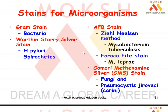Helicobacter pylori can also be detected with silver stains for spirochetes. Spirochetes are another group of microorganisms — famous examples include Treponema pallidum, which causes syphilis, a sexually transmitted infection, and Borrelia burgdorferi, which causes Lyme arthritis.